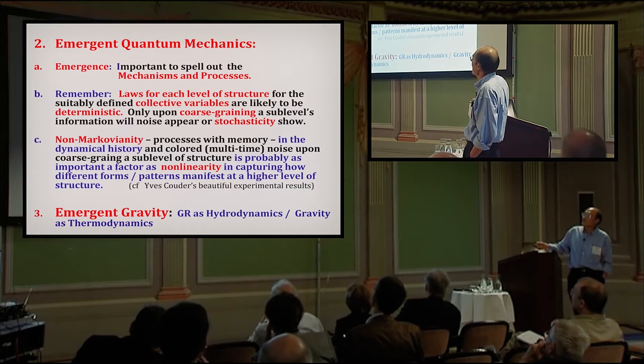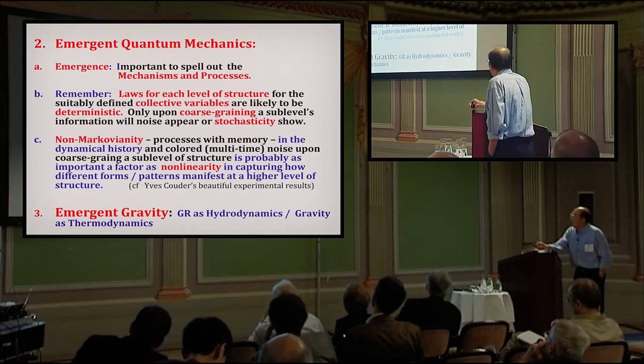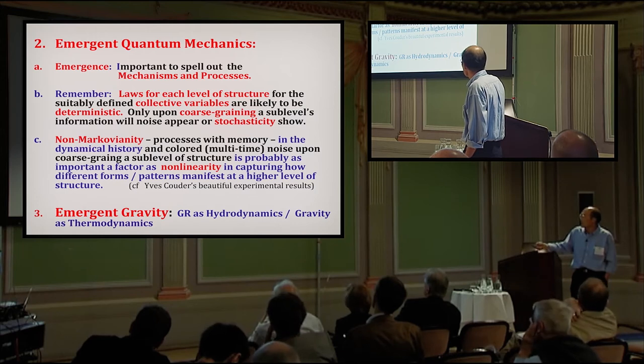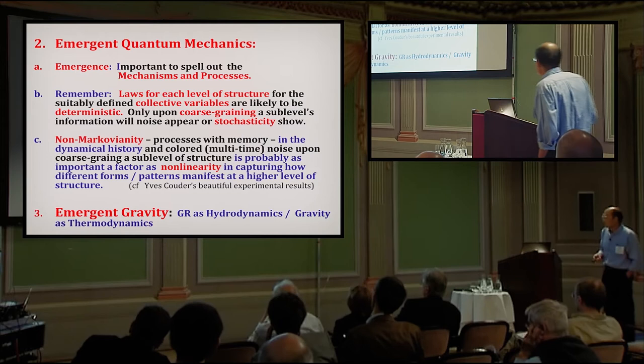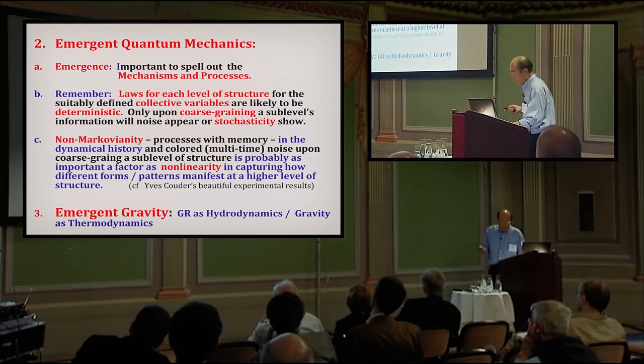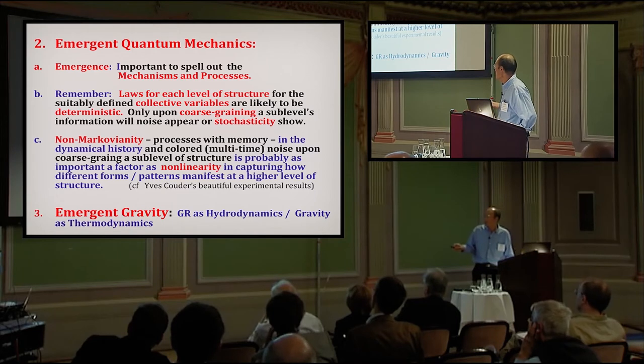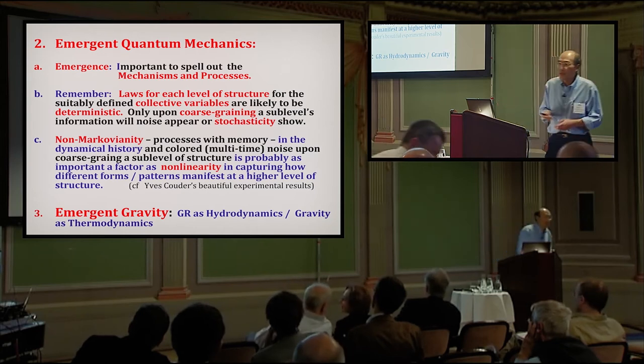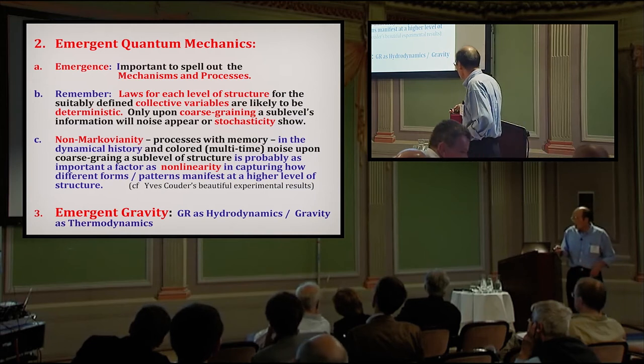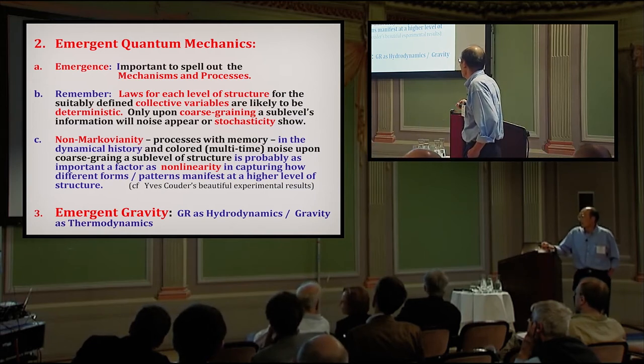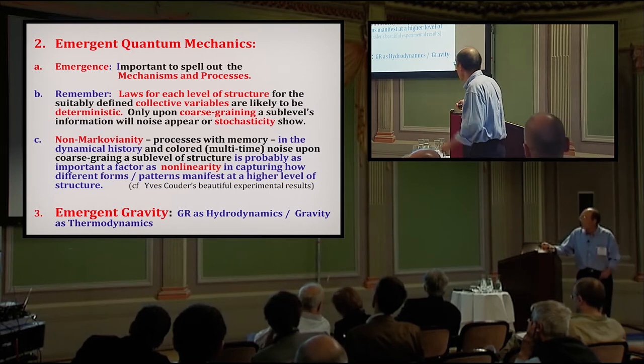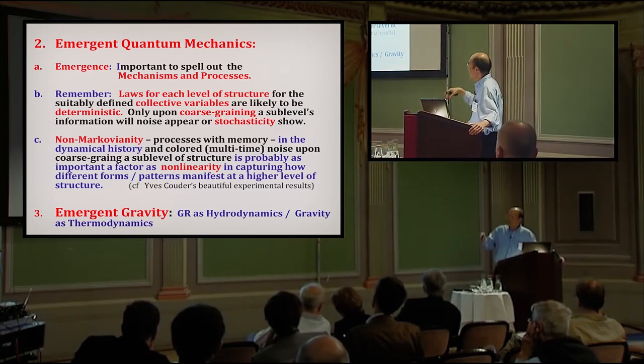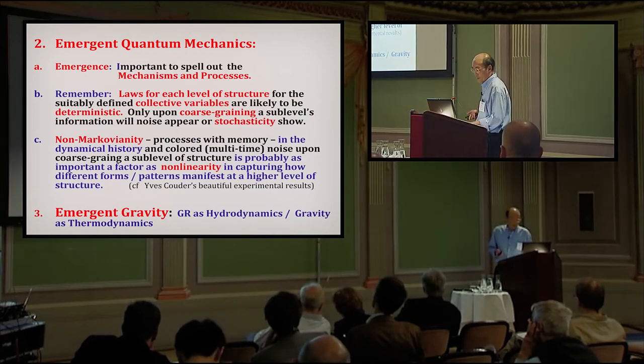Non-Markovianity is probably as important a factor as non-linearity in capturing how different forms or patterns manifest at a higher level of structure. You can actually decipher this statement, but you can see this so clearly demonstrated in those experiments. And, well, last time I mentioned emerging gravity. That is included. But by itself, we need to also understand gravity better. In particular, in quantum mechanics, we're thinking about the sub-level of structure.